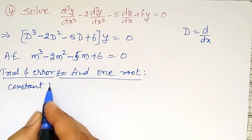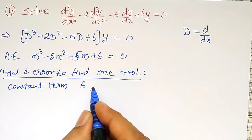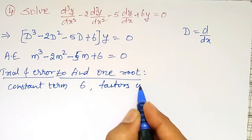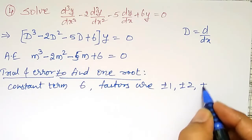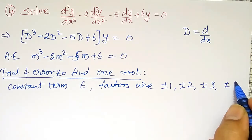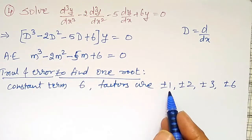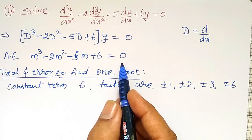How to find out that one root by trial and error? Here is the constant term 6. Constant term 6, factors are plus or minus 1, plus or minus 2, plus or minus 3, and plus or minus 6 are the factors.